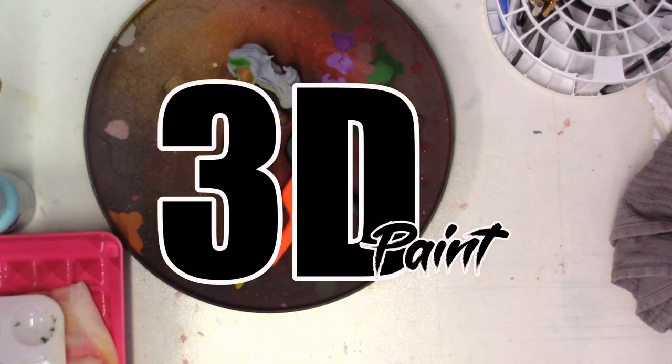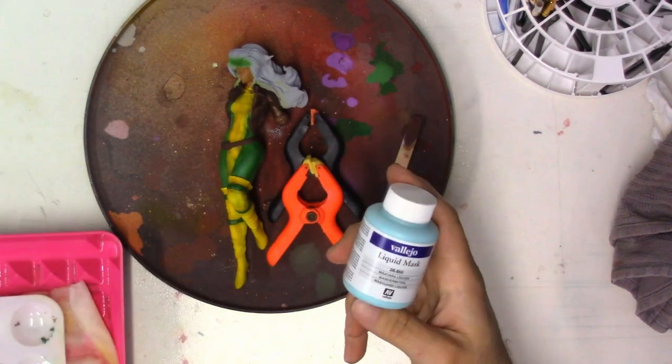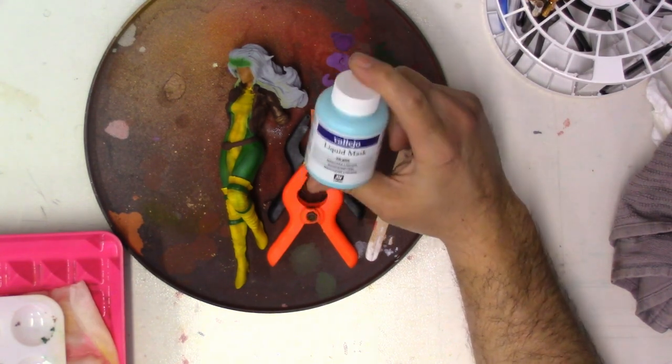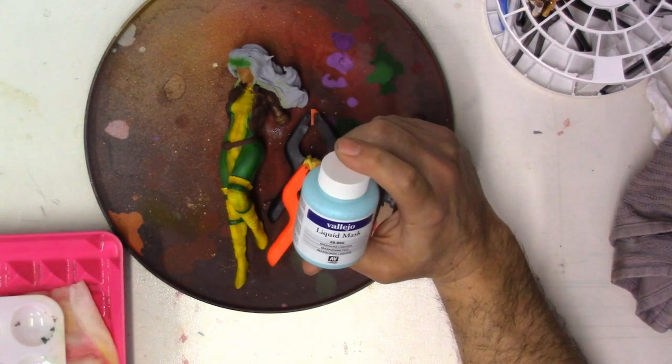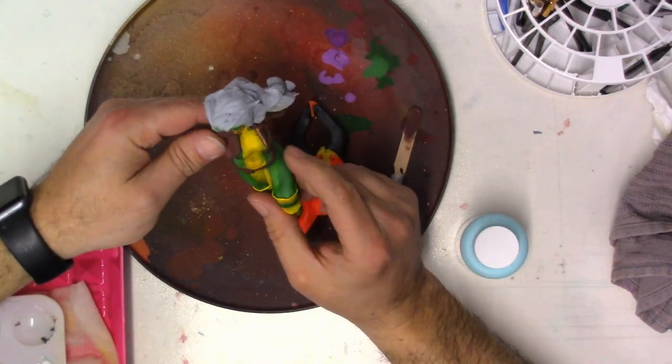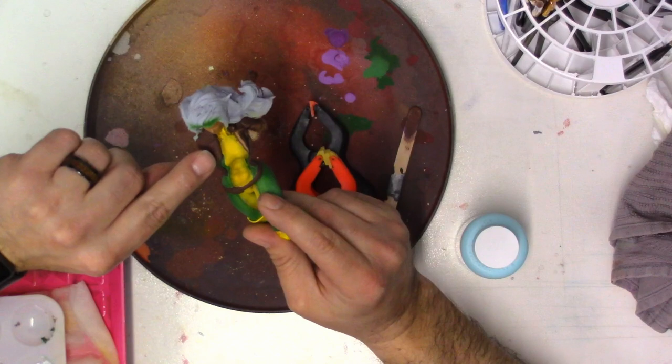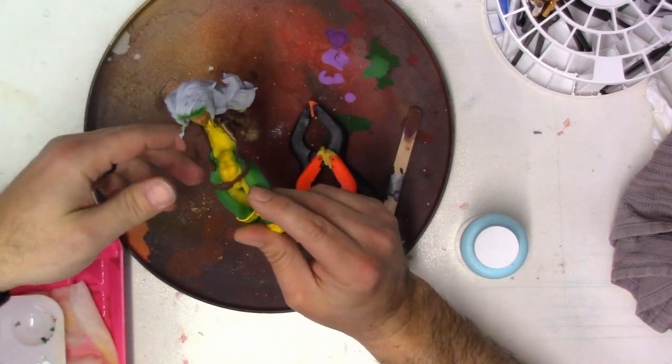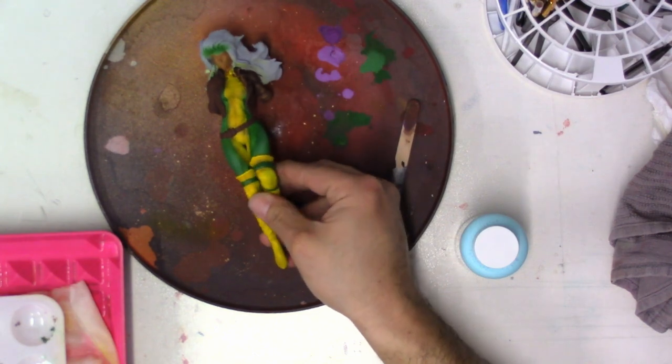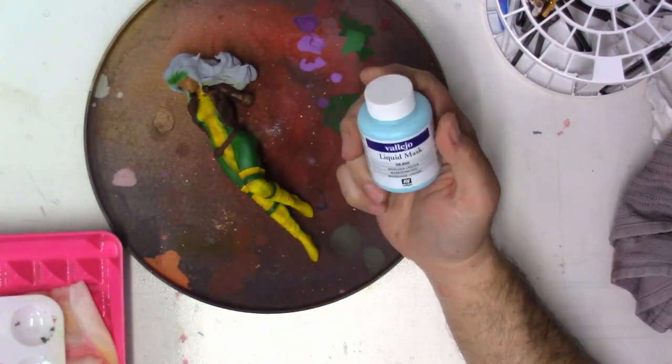Hello and welcome to another episode of 3D Paint. Today we're going to be taking a look at liquid mask. To be perfectly honest, I have never used this, but I have a problem with the yellow and brown right up here. I need to re-airbrush it. It's more of an experimental piece than a finished piece, so I figured I'd try some of this liquid mask.